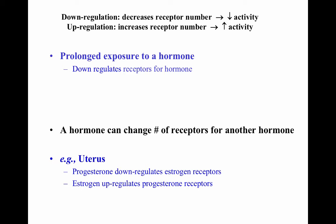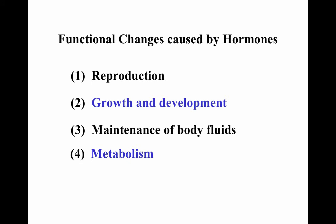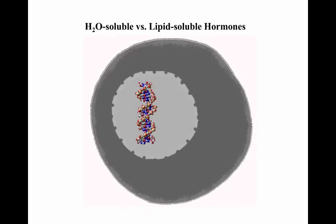The four major functional changes caused by hormones are: reproduction, growth and development, maintenance of body fluids, and metabolism. These are why hormones matter and how they allow us to live the lives we do.